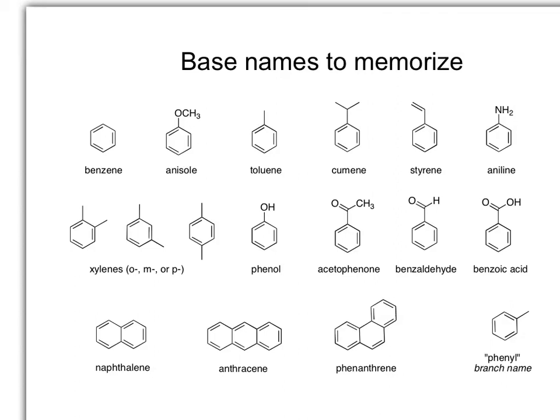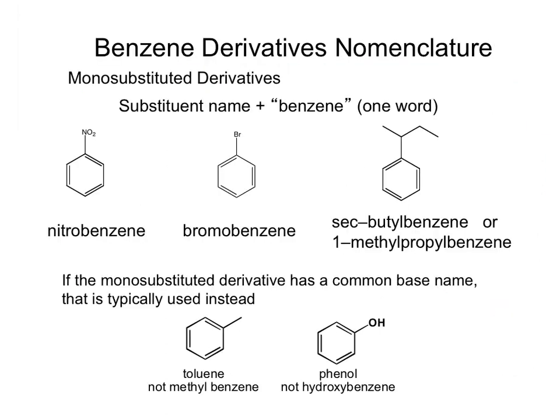For benzene nomenclature, you're going to be expected to memorize the most common base names for the monosubstituted benzene derivatives. As far as naming monosubstituted benzenes, it's really pretty straightforward. You just take the substituent name and tack the word benzene onto the end of it.